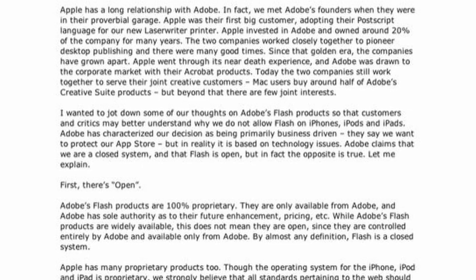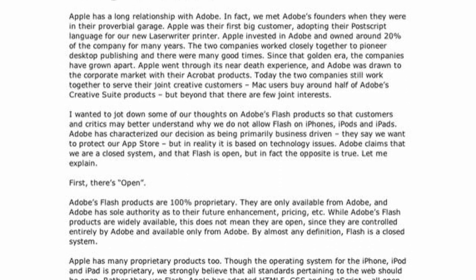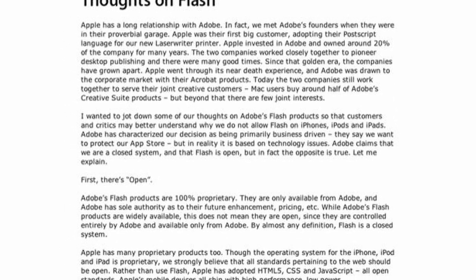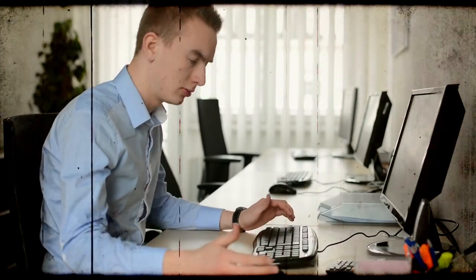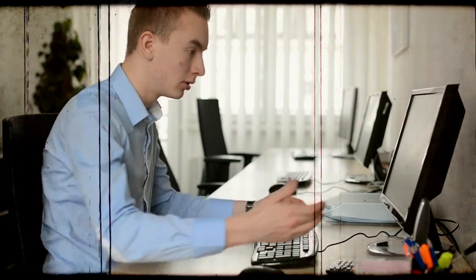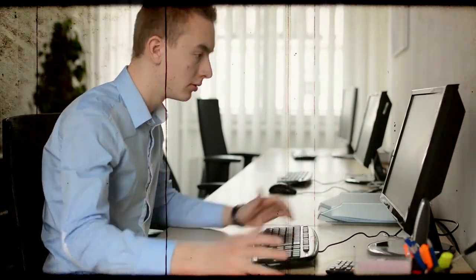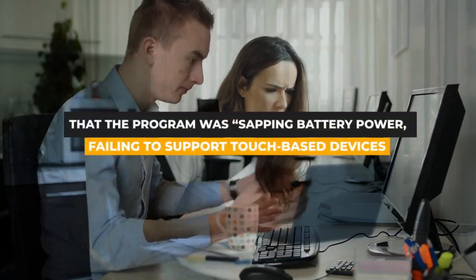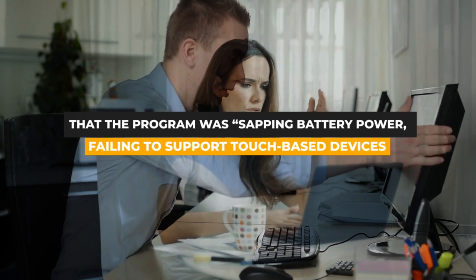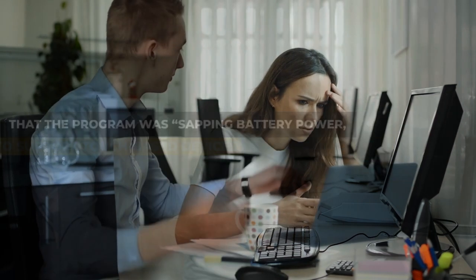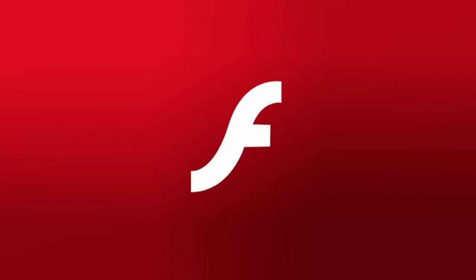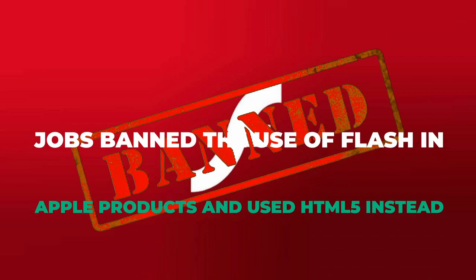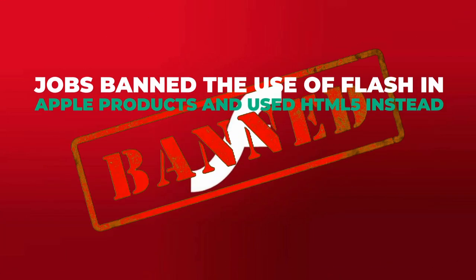However, Flash's fall began when Steve Jobs published an article titled 'Thoughts on Flash.' He argued that Flash was buggy and had security flaws. In his words, 'Flash is a spaghetti-ball piece of technology that has lousy performance and terrible security problems.' He also said that the program was sapping battery power, failing to support touch-based devices, and having technical and security drawbacks. Afterwards, Jobs banned the use of Flash in Apple products and used HTML5 instead.